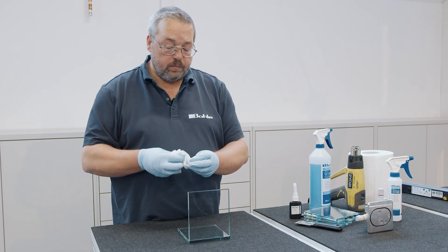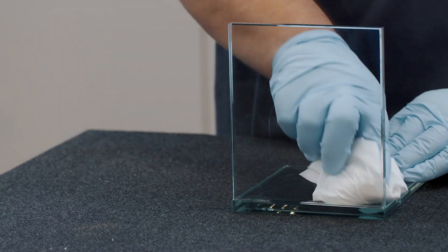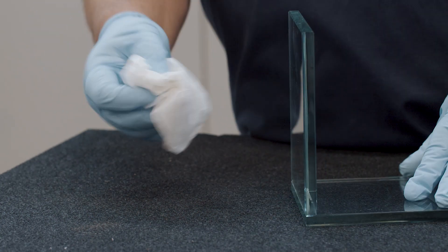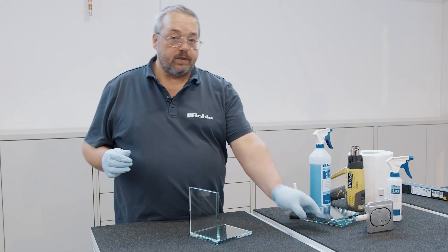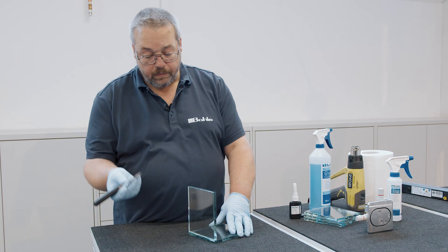However, some excess adhesive remains in the inner and outer seam. The largest part of this excess adhesive can be removed while it's still liquid. We use a blade to remove the already pre-cured bits of excess adhesive.